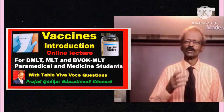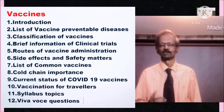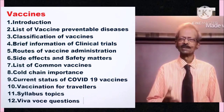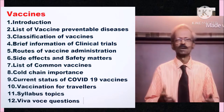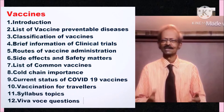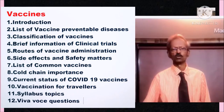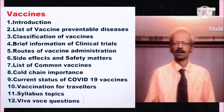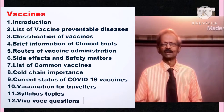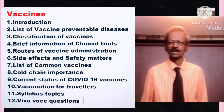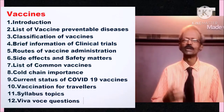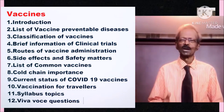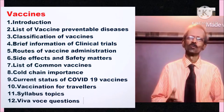The points considered for this lecture are: 1. Introduction, 2. List of vaccine-preventable diseases, 3. Classification of vaccines, 4. Brief information on clinical trials, 5. Routes of vaccine administration, 6. Side effects and safety methods, 7. List of common vaccines, 8. Cold chain importance, 9. Current status of COVID-19 vaccines, 10. Vaccination for travelers, 11. Related topics, 12. Viva voce questions.